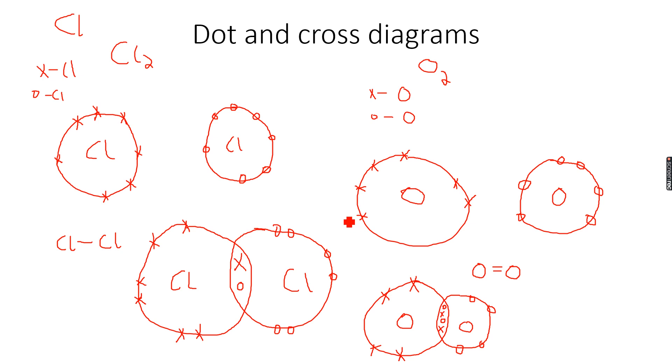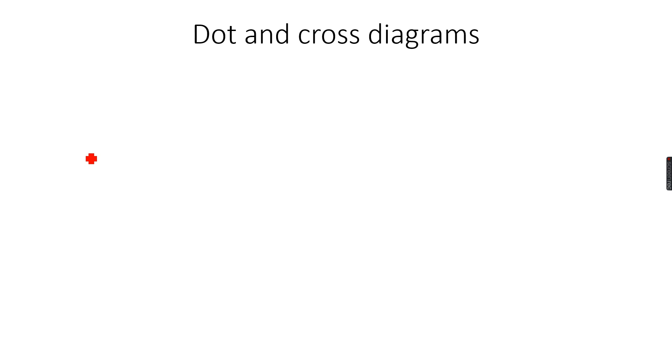So we will mostly be using these lines in organic chemistry when we do organic chemistry, but you should know how we make them. Now, when we look at nitrogen, so we have done single bonds and double bonds.